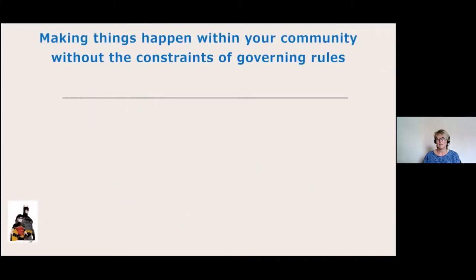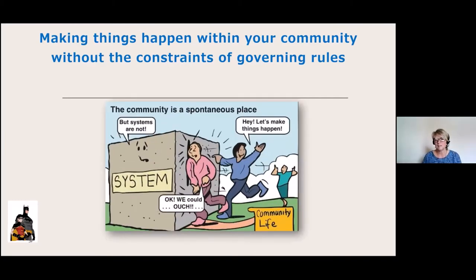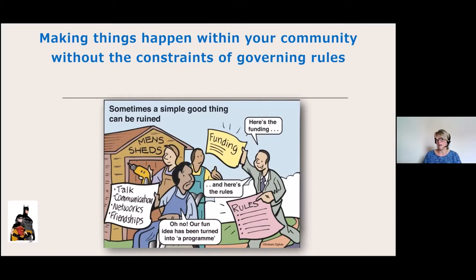Here's about making things happen within our community without the constraints of governing rules. We've got these people in our community who can be like Batman and Robin, getting out there, doing really good for the community. The community is a spontaneous place — let's make things happen. And then all of a sudden we go into the systems that people often say you have to do it this way or that way. Sometimes a simple good thing can be ruined by things like funding, for instance.